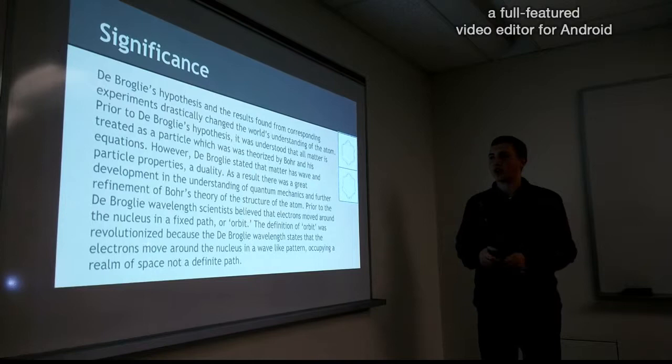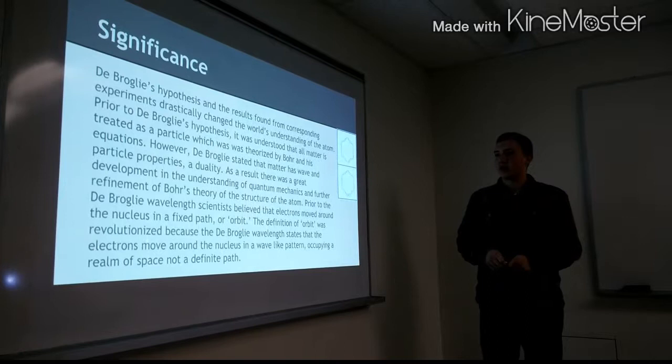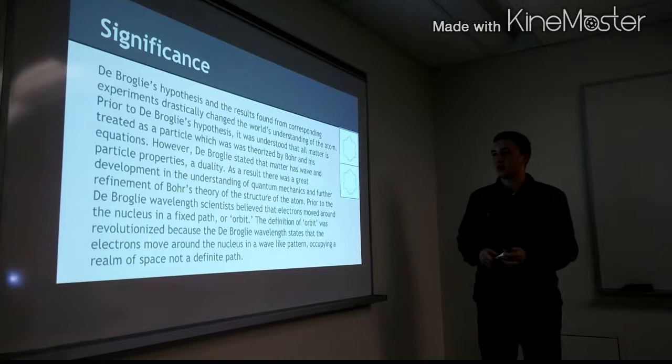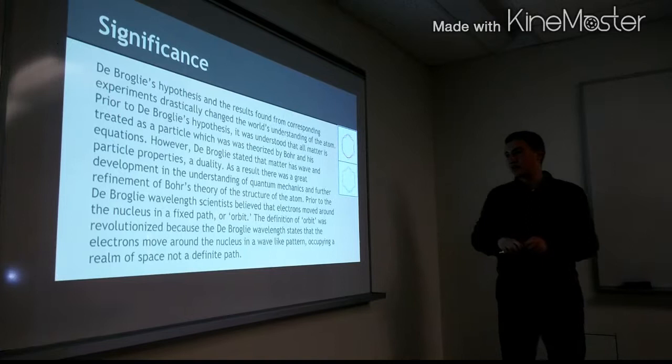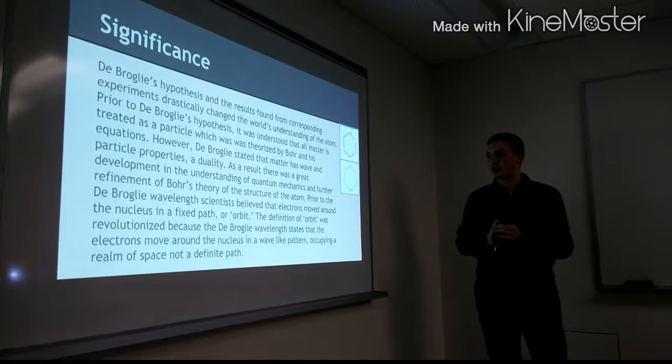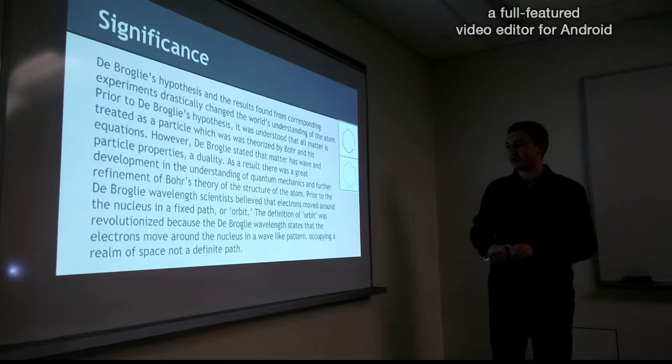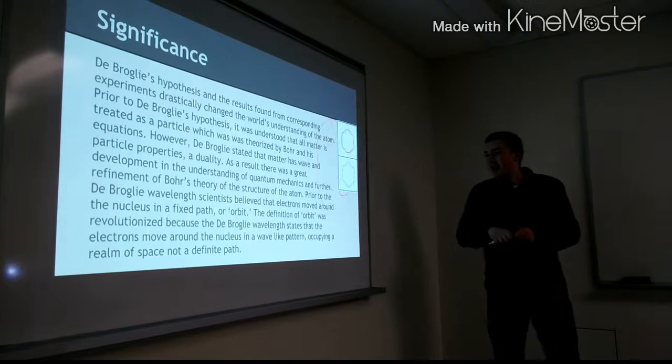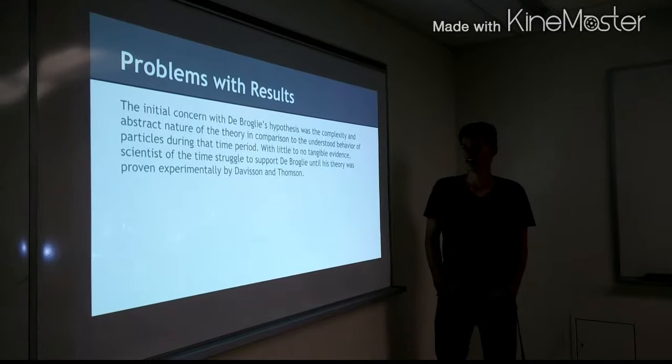However, De Broglie stated that matter has wave and particle properties, which is also known as a duality. As a result, there was a great development in the understanding of quantum mechanics and further refinement of Bohr's theories of the structure of the atom. Prior to De Broglie's wavelength, scientists believed that electrons moved around the nucleus in a fixed path. However, the definition of orbit was revolutionized by the De Broglie wavelength state, because the De Broglie wavelength states that the electrons move around the nucleus in a wave-like pattern. Occupying a realm of space, not a definite path.